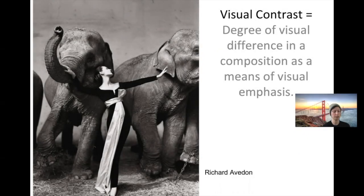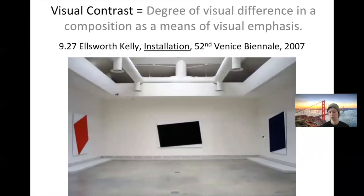Visual contrast describes how a unique object within a composition can capture the viewer's attention — the focal point is created through visual contrast. It draws your eye to the subject matter, as in this photo where our eye is drawn more to the woman in the center than to the elephants that surround her. This is an installation of three of Ellsworth Kelly's paintings on display at the Venice Biennale in 2007.